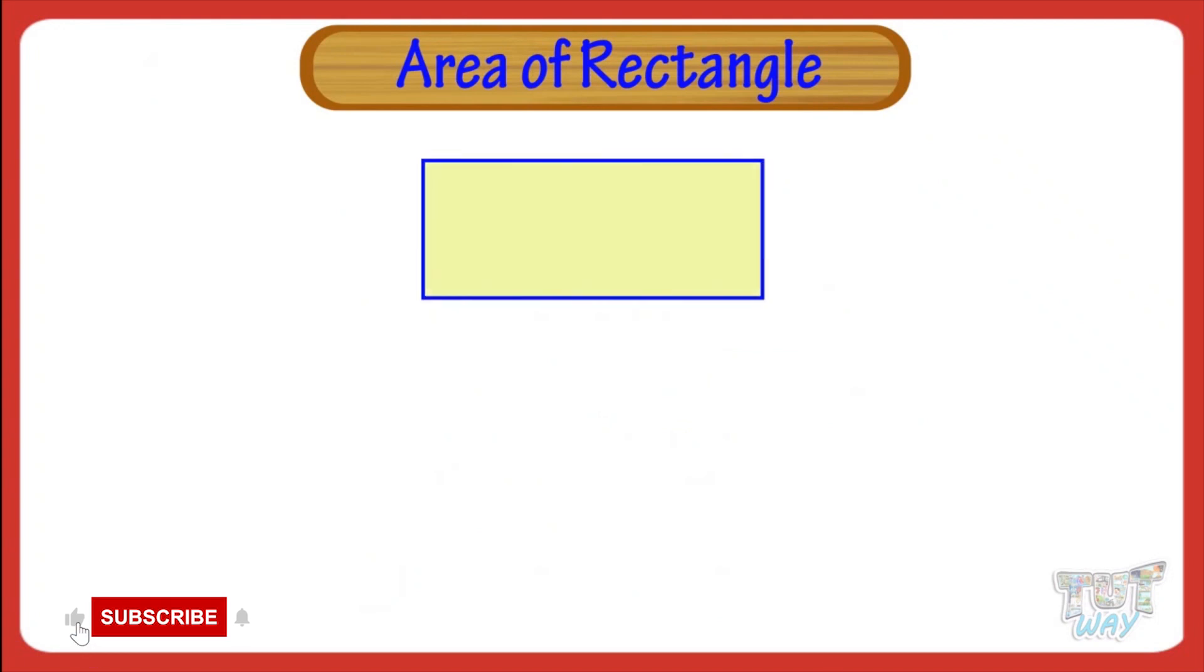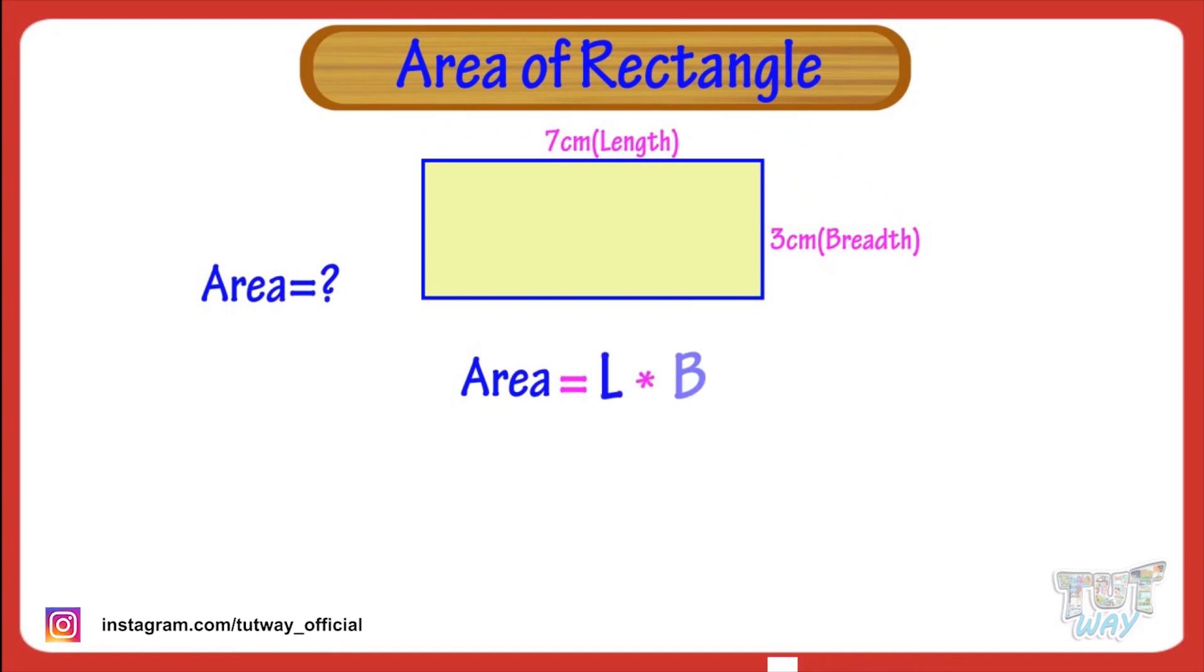Here we have a rectangle. Let's find its area. Formula to find the area of a rectangle is very simple. Just multiply length with breadth. So, area of rectangle is the product of its length and breadth.